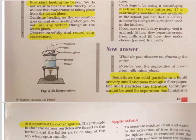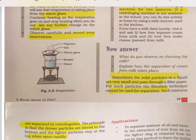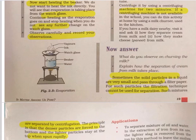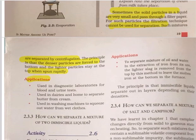The principle of centrifugation is that the denser particles are forced to the bottom and the lighter particles remain at the top when spun rapidly. In this way we can separate the components. Centrifugation machines are used in diagnostic laboratories for blood and urine tests, in the dairy and at home to separate butter from cream, and in washing machines to squeeze out water from wet clothes.